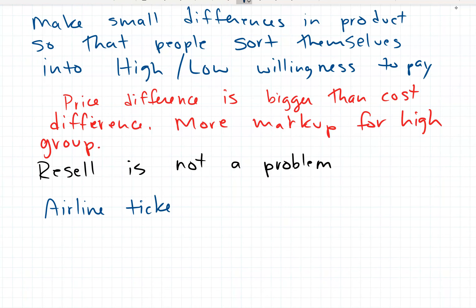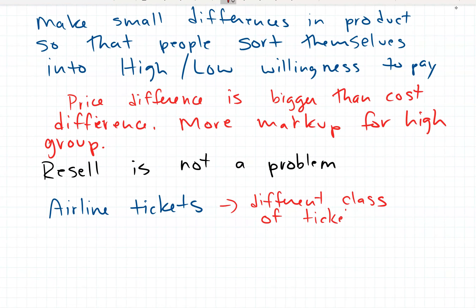With airline tickets, different classes are used to sort people into lower and higher value groups. The most basic example is business versus economy class. Yes, business class comes with more services and legroom, but the cost of providing those does not explain the price difference. In many cases business class tickets cost several times more than economy, but what passengers get doesn't cost several times more to produce.